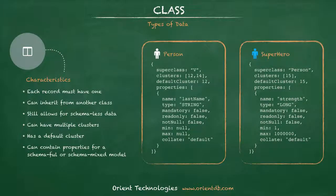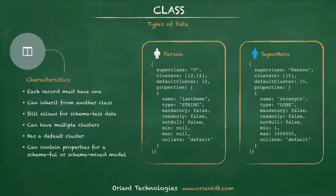A class is what defines the structure of data elements in your database. You can specify extremely loose and flexible rules or extremely rigid schemas with consistent and predictable values. Classes can inherit from a base class and create polymorphism or subtyping inside of your data model. A class stores its data inside of a cluster and is assigned a default cluster automatically. A class may also be configured to store its data in more than one cluster. The class level is where you can implement a schema-full, schema-less, or schema-mixed model. Schema mixed models have a portion of the data defined with schema, but still allow unstructured data to be created in addition.